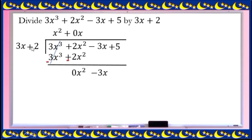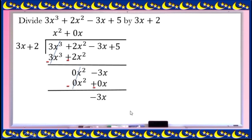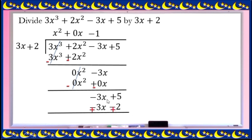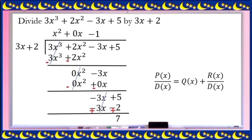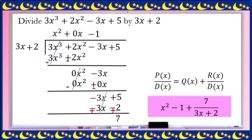Subtract, bringing down negative 3x. Bring down the next term, positive 5. Negative 3x divided by 3x is negative 1. Negative 1 times 3x is negative 3x; negative 1 times 2 is negative 2. Subtract and change the sign, cancel. 5 plus 2 is 7, so 7 is our remainder. Since the 0x term means nothing, the final answer is x squared minus 1, plus remainder 7 over (3x plus 2).